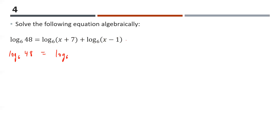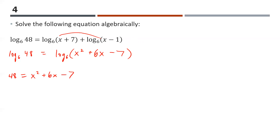Expanding (x+7)(x−1) using FOIL: x squared minus x plus 7x minus 7, which simplifies to x squared plus 6x minus 7. Since we now have log base 6 of 48 equals log base 6 of that expression, the logs cancel and we get 48 equals x squared plus 6x minus 7. Subtracting 48 from both sides gives 0 equals x squared plus 6x minus 55.